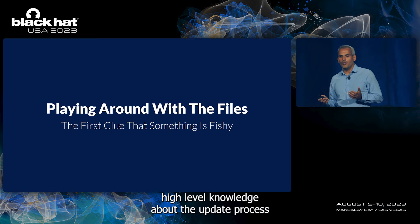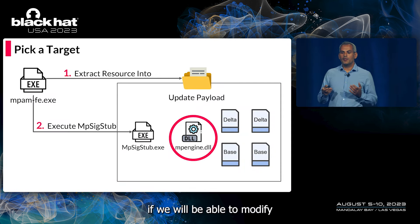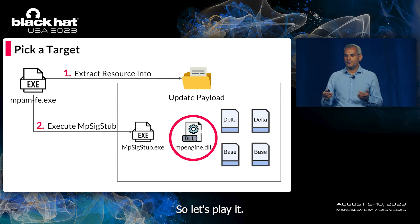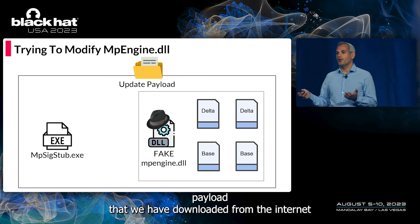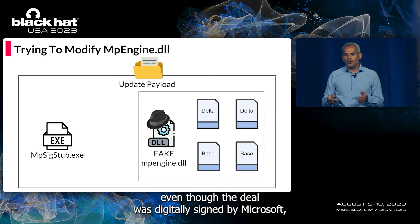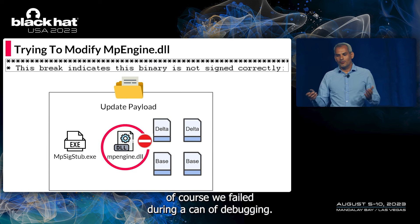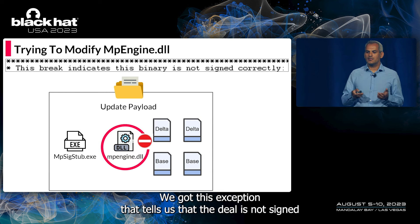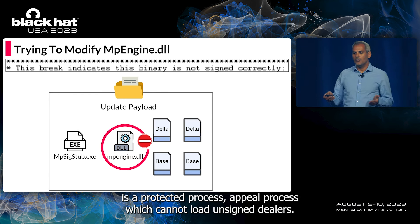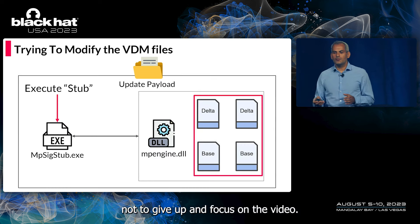Now having high-level knowledge of the update process, we started to play with the involved files. If we could modify MP Engine with our own DLL, it would be game over for Defender, resulting in local privilege escalation. We modified a valid update payload downloaded from the internet and replaced the original MP Engine with our own fake DLL. Then we executed SigStab with the appropriate command line — and of course we failed. During kernel debugging, we got an exception telling us the DLL is not signed. This protection exists because Defender's main process is a Protected Process Light (PPL), which cannot load unsigned DLLs. So we decided not to give up and focused on the VDM files instead.